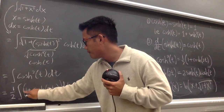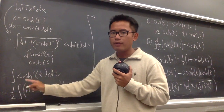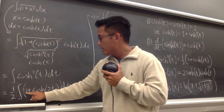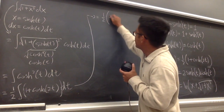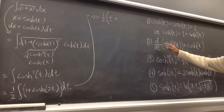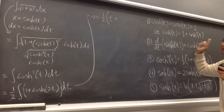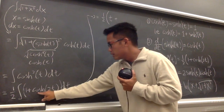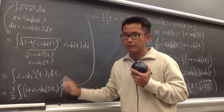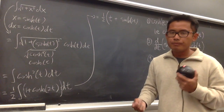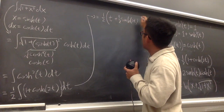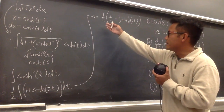We still have the 1/2 out front. The integral of 1 in t is just t, plus the integral of cosh(2t): since the derivative of sinh is cosh, the integral of cosh(2t) is sinh(2t), and we divide by the derivative of the input 2t, which is 2, giving a factor of 1/2. So we have 1/2 times the quantity t plus (1/2)sinh(2t). We're done with the integration.